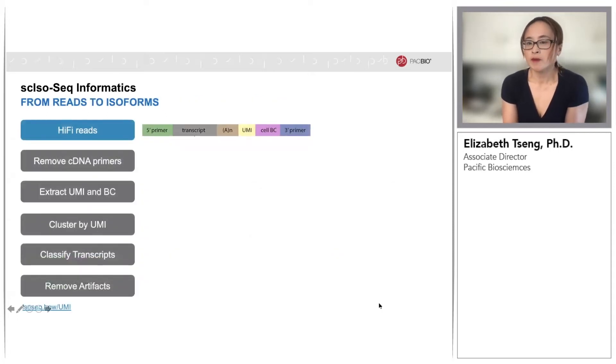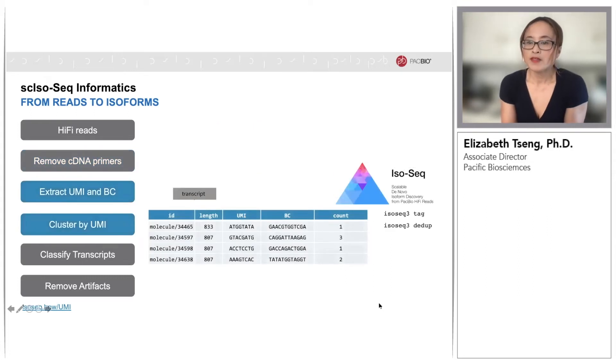Now I'd like to spend a few minutes talking about the bioinformatics workflow for single-cell Iso-Seq. Note that this workflow is in active development. We begin with the HiFi reads that will contain the primers as well as the UMIs and barcodes. The next step is to remove the primers. A common tool used for this is the PacBio tool called Lima. We may then extract the UMI and cell barcode information using an Iso-Seq tool called Iso-Seq3 tag. We can then deduplicate founder molecules based on the UMI barcode information using the tool Iso-Seq3 dedupe.